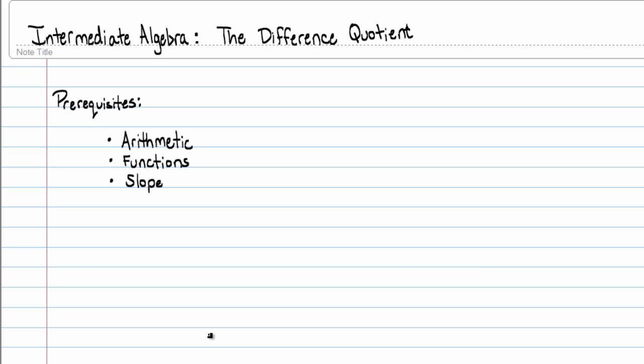So the prerequisites for this section are going to be obviously arithmetic. You need to know how to add, subtract, multiply, divide, all the fun stuff. You'll need some knowledge of what a function is and some functional ideas, and then also something that doesn't seem like it would be required, but it is the idea of a slope.